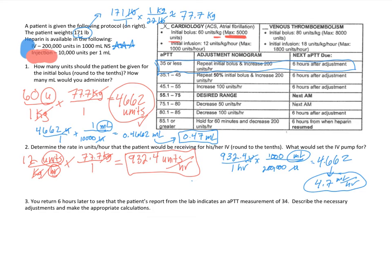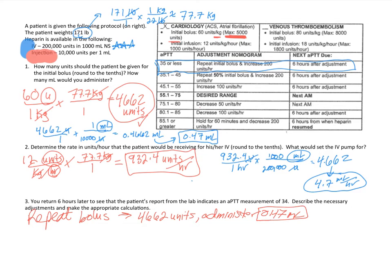First, we repeat the bolus. The patient needed 4,662 units, and we administered 0.47 milliliters — so we repeat exactly that. Sometimes the bolus might need to be increased by a certain number of units or a percentage, but in this case we are simply repeating it.